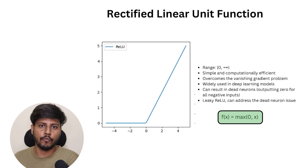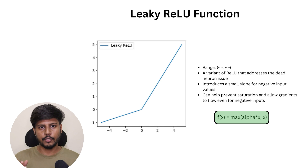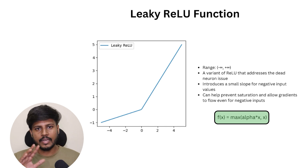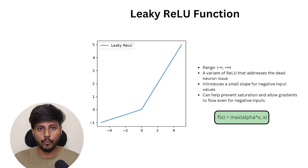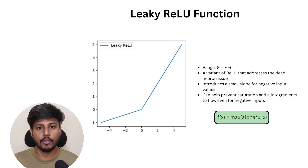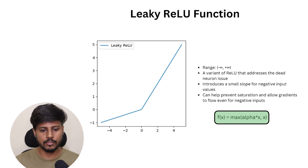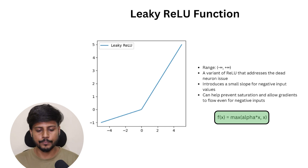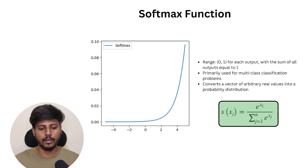Leaky ReLU is a variant of ReLU where we introduce a slight slope for negative values. In standard ReLU, negative values are set to zero, but in Leaky ReLU we multiply the negative values by an alpha value that we choose — for example 0.01 or 0.02. You adjust the alpha value based on the complexity of your problem and dataset. This solves the dying ReLU problem.